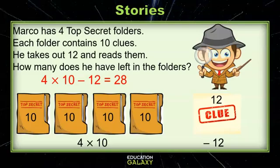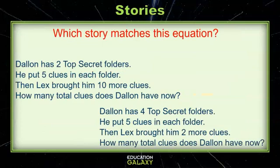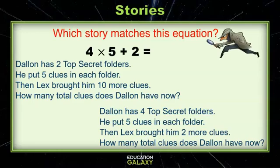Good job. All right, now this one's going to be a little tricky. We're going to really have to use our detective skills and our clues. Which story matches this equation? 4 times 5 plus 2 equals what? Let's think about that for a little bit. What does that equal? 4 times 5 is 20, plus 2 gives us 22.